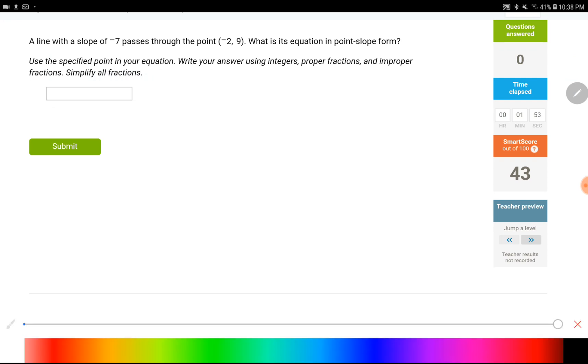So now they don't give us the pre-filled form, they just want us to type everything in, because they are assuming that you already figured out how a point slope form would look like.